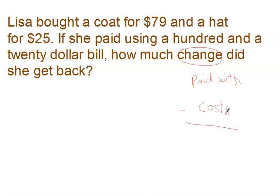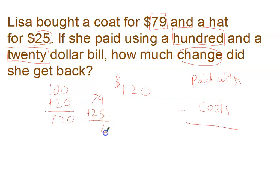So let's see if we can find those two things. What I paid with, we paid with a hundred and a twenty-dollar bill. Well, so a hundred plus twenty, that's a hundred and twenty dollars. Then, what did we spend? Or what did it cost? Seventy-nine plus twenty-five. And those two up. Nine plus five is fourteen. Seven, eight, nine, ten. We spent a hundred and four bucks.